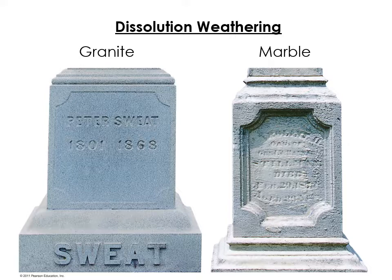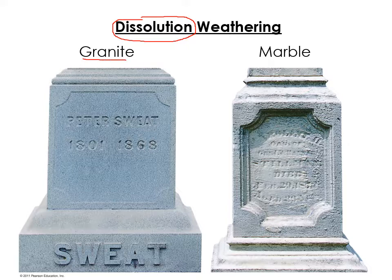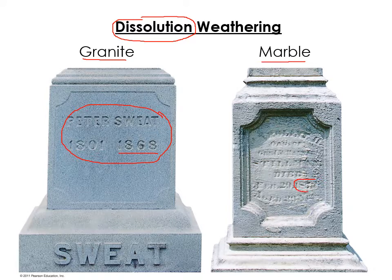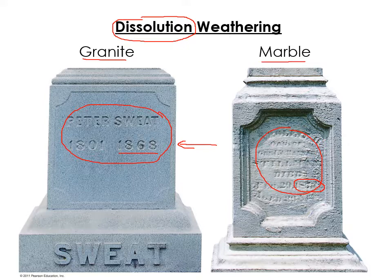There are a couple of major ways we weather rocks chemically. One is dissolution weathering — some minerals are soluble in water, especially calcite, the main mineral in limestone and marble. These two tombstones illustrate this: the one on the left made of granite, carved in 1868, is still very readable. The marble one on the right, from 1878, is barely readable, because rainwater is weakly acidic due to dissolved carbon dioxide, and that weakly acidic rainwater dissolves the calcite in the marble.